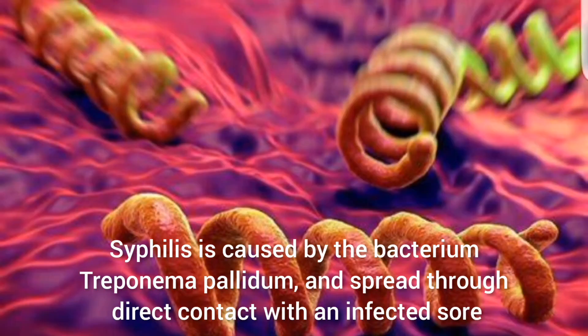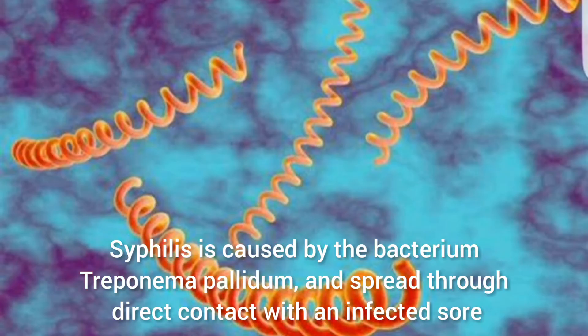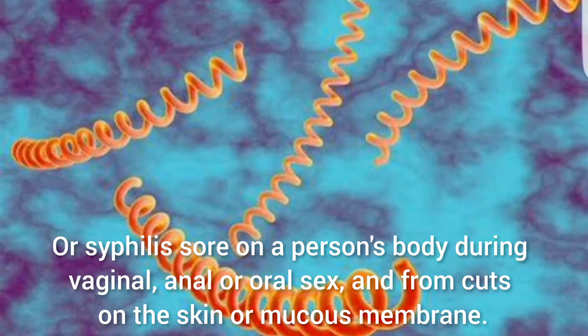Syphilis is caused by the bacterium Treponema pallidum, and spread through direct contact with an infected sore on a person's body during vaginal, anal, or oral sex, and from cuts on the skin or mucous membrane.